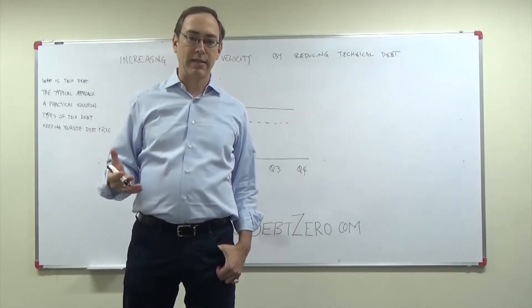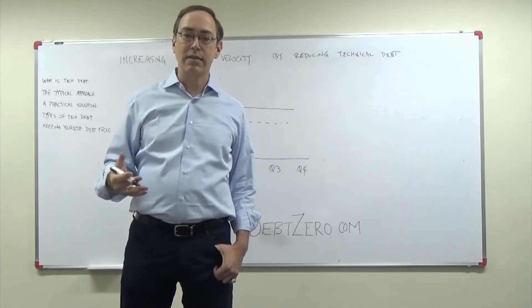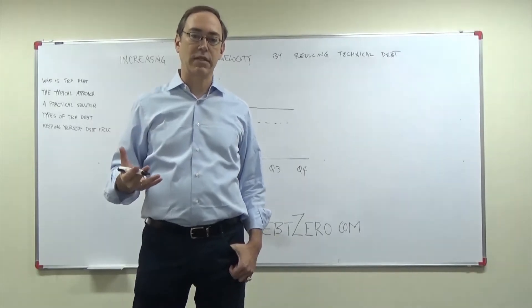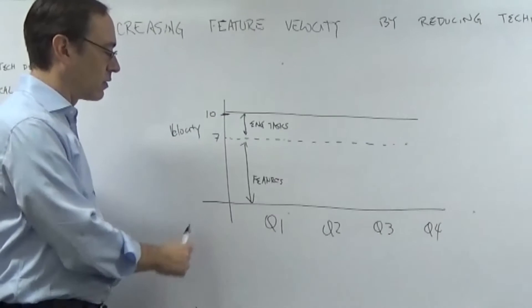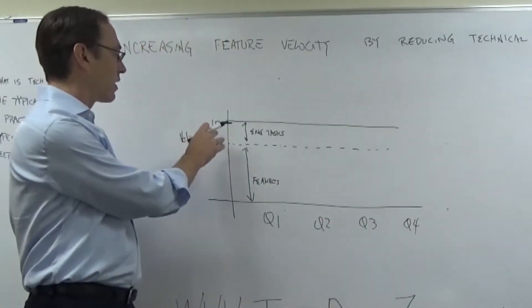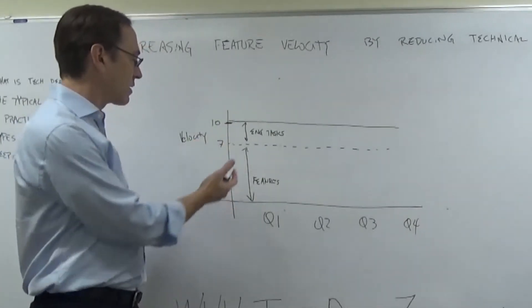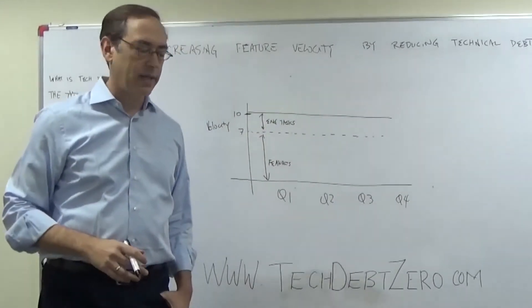So of the 10 units of capacity, you might want to use three of that for what I would call engineering tasks, things that keep the system healthy and in good shape, and seven to deliver features to your customers. So that picture might look like this. We have velocity on the vertical dimension and we have time on the horizontal. And you see that if you have a total capacity of 10, in this scenario, you would be using seven to deliver features for customers every quarter. You'd be using the remainder for engineering tasks.